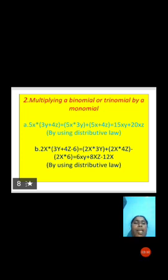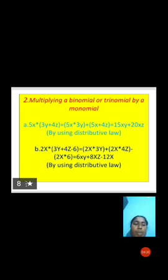Next: multiplying a binomial or trinomial by a monomial. First example: 5x × (3y + 4z). Here 5x is a monomial and (3y + 4z) is a binomial. Applying the distributive law: 5x × 3y + 5x × 4z. Since 5x × 3y = 15xy and 5x × 4z = 20xz, therefore 5x × (3y + 4z) = 15xy + 20xz.